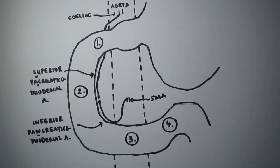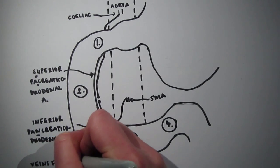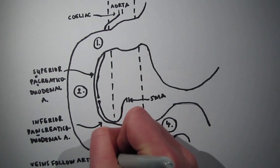Once again, the veins follow the arteries, with the superior pancreaticoduodenal veins draining directly into the portal vein and the inferior ones into the SMV.